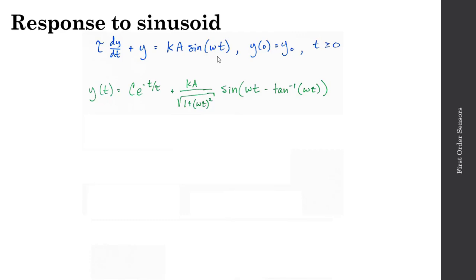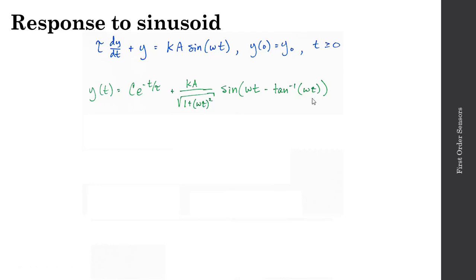But my steady-state component now is going to be quite different. I have a sinusoid at the same frequency — I had an input frequency of omega, and the steady-state component has a frequency at the same omega. The magnitude of this steady-state component is going to be equal to k times a, divided by the square root of 1 plus omega tau squared. And I also have a phase shift of the arctan of omega times tau.